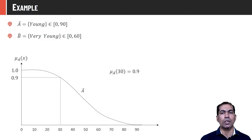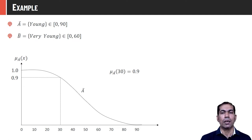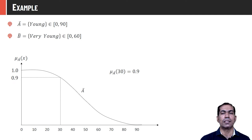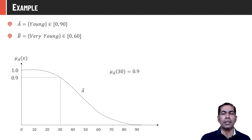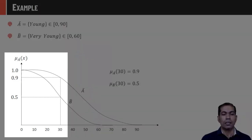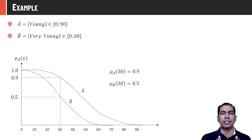Consider fuzzy set Ā = 'young' with age range 0 to 90, using a sigmoid or half-bell shape. A person of age 30 has membership value 0.9 in the 'young' set. As age increases, membership value for 'young' decreases. If we consider another fuzzy set B̄ = 'very young' with age range 0 to 60, and model it with a different function, the same person of age 30 gets membership value 0.5 because 30 is exactly halfway in the 0 to 60 range.